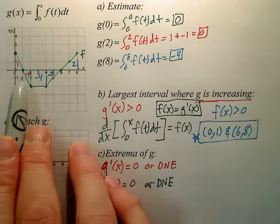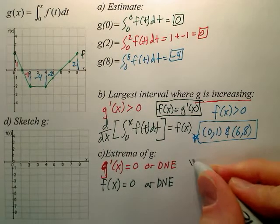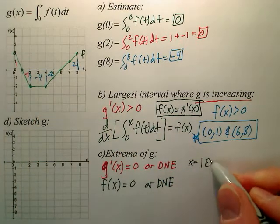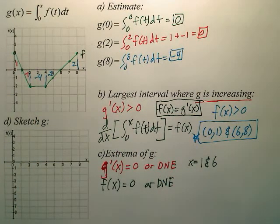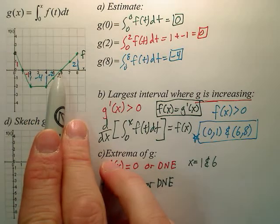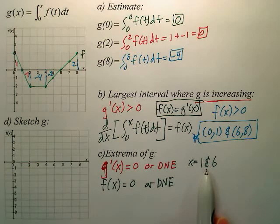So where is f of x 0? That would be at x equals 1 and x equals 6. Those are the two values where the graph equals 0, where f is 0.